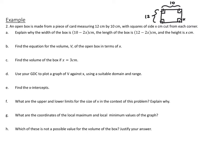In this example, we have an open box being made out of a piece of card measuring 12 cm by 10 cm. Little squares of side x are cut out of the corners, and then it's folded up to make an open box without a top. Part A says explain why the width is (10 - 2x) cm, the length is (12 - 2x) cm, and the height is x. Part B says find the equation for the volume V of the open box in terms of x.